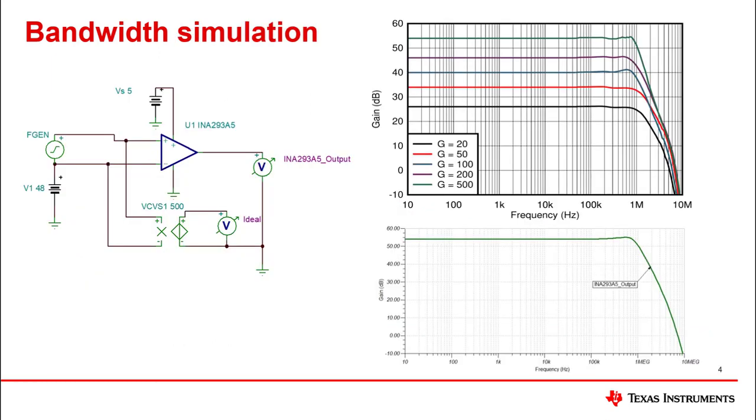Here is an example of the bandwidth simulation of the INA 293A5. The simulation has an AC source and the INA 293A5. The voltage-controlled voltage source is an ideal gain and will be used for future simulations for comparison. The input is a function that generates a differential voltage emulating a voltage across our shunt resistor. The INA 293A5 has a gain of 500, so we will first look at the typical plot from the datasheet and observe there are differences in the bandwidth depending on the gain.